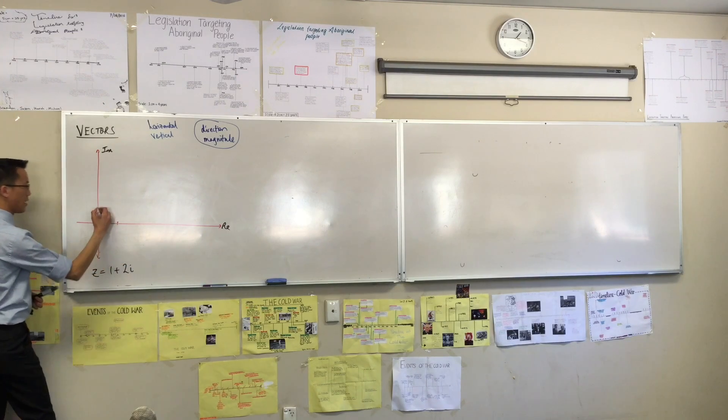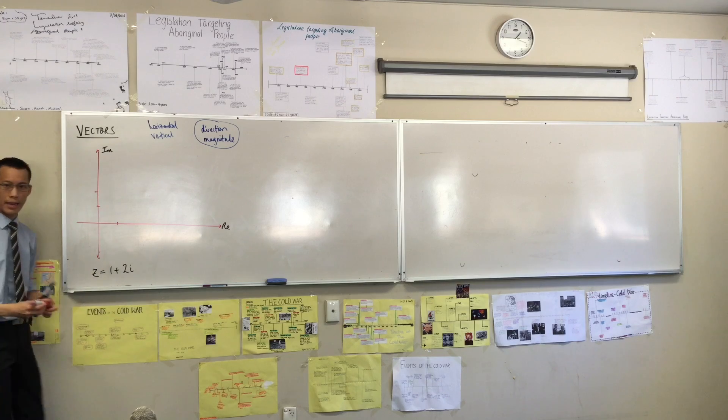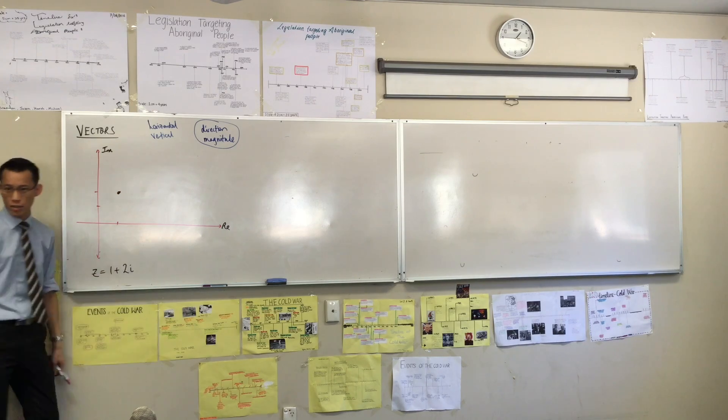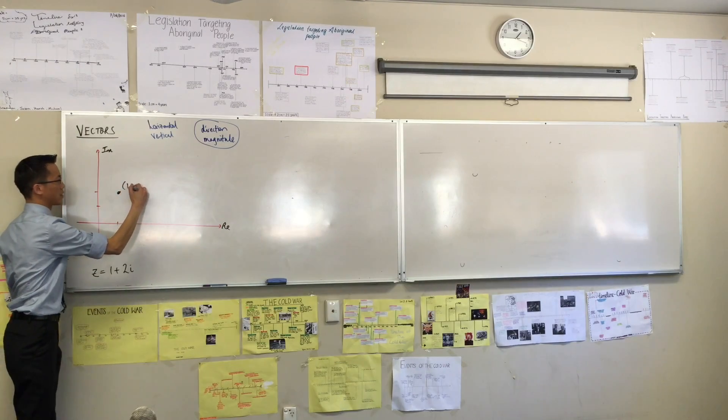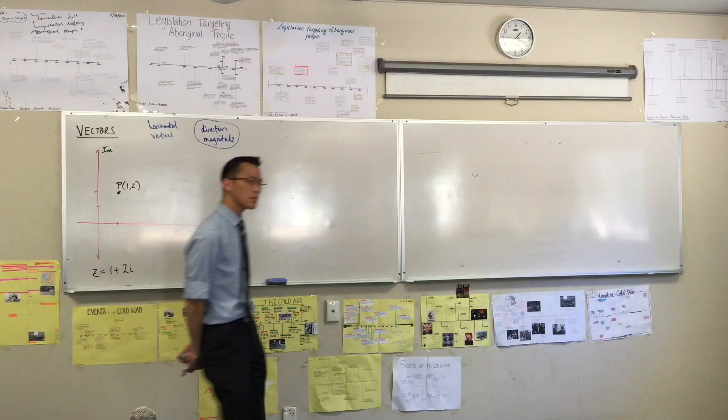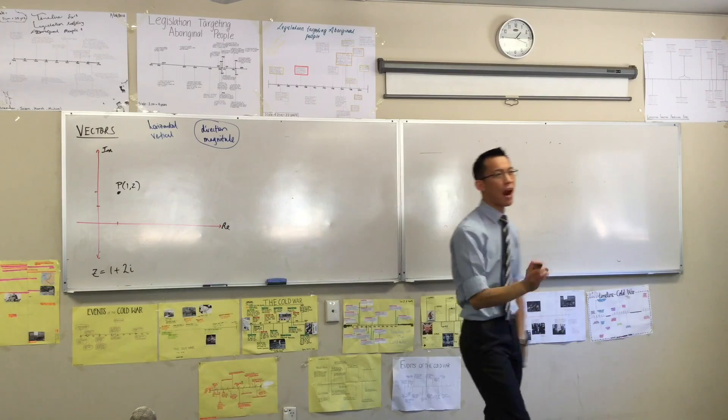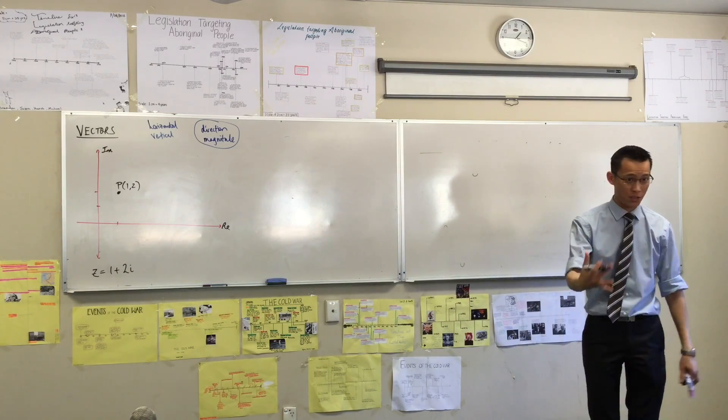So if I said there's 1, and there's 1, 2, okay? 1 plus 2i would be here. Do you agree with that? That's where I could describe it. Now it's got coordinates 1, 2, let's call that P.